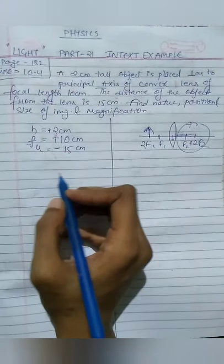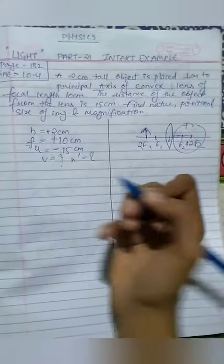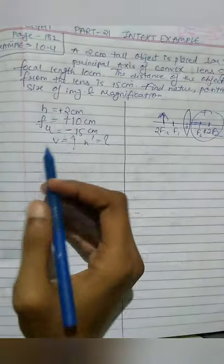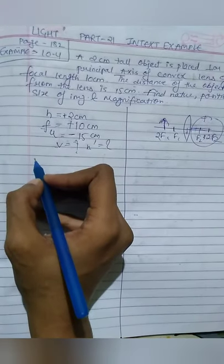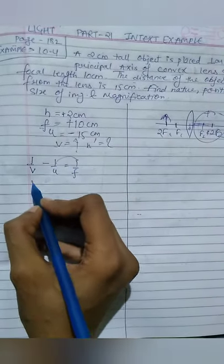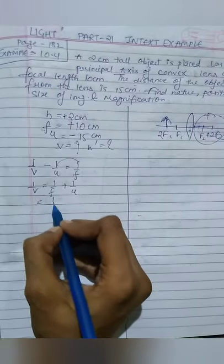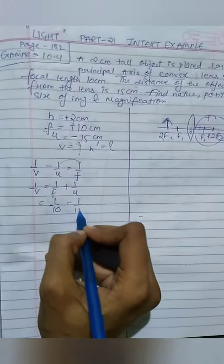Now we have to find v and h'. We have to find two things: image distance and image height. What is the lens formula? This is the lens formula. We take v, we take this side: 1 by v is equal to 1 by f plus 1 by u. 1 by f is equal to 1 by 10 minus 1 by 15.